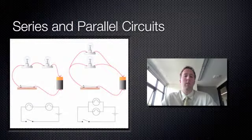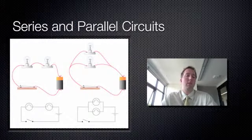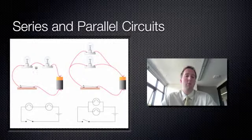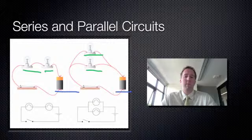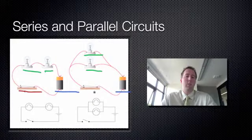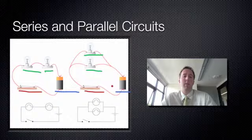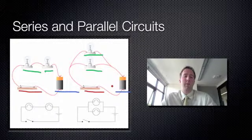You can see they're quite similar in that both of these circuits have got two light globes. They've both got a battery, and they've both got a switch as well. So they've all got the same kind of components in them, but they're arranged a little bit differently.